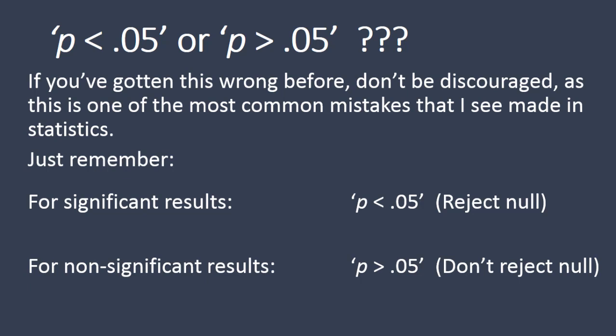For significant results, P is less than 0.05 is when you reject the null hypothesis. For non-significant results, P is greater than 0.05 is when you fail to reject the null, or accept the null, as some say. As a reminder, if you were to use an alpha of 0.01, then you would say P is less than 0.01 or P is greater than 0.01, depending on whether you got significant or non-significant results, respectively. Okay, that's it. Thanks for watching.